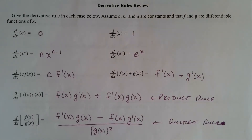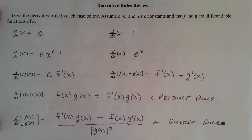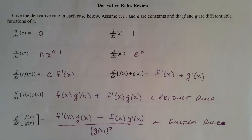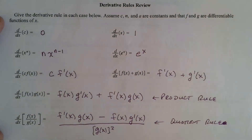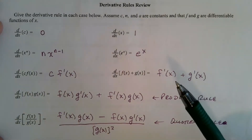We're going to switch to the indefinite integral. We've talked about the definite integral, and today we're going to look at the indefinite integral, and the process also known as anti-differentiation. As the name implies, we are going to basically be undoing differentiation, or finding a derivative. In order to undo that, you need to know all these derivative rules that we learned in Calculus 1.